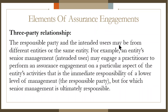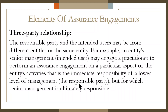The responsible party and the intended users may be from different entities or the same entity. For example, an entity's senior management may engage a practitioner to perform an assurance engagement on a particular aspect of the entity's activity that is the immediate responsibility of lower-level management — the responsible party — but for which senior management is ultimately responsible. So we have three parties: the practitioner, the intended user which is senior management, and the responsible party which is the lower level of management.